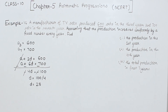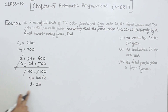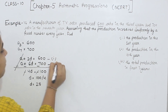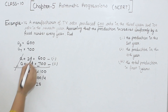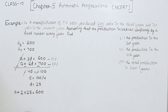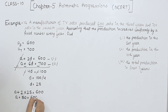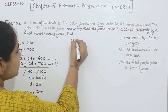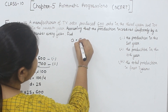Now we have to find the first term 'a'. We are going to find 'a' by putting the value of d into equation number 1. So a + 2d = 600, with d = 25, gives a + 50 = 600. Transposing, a = 600 minus 50, so a = 550.